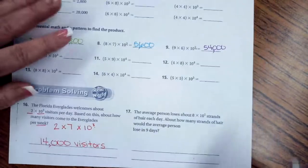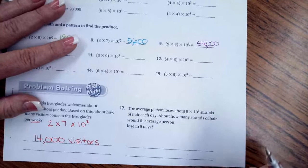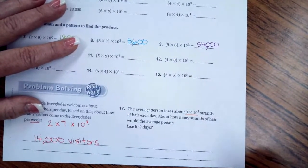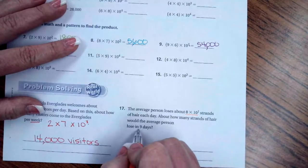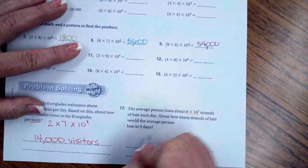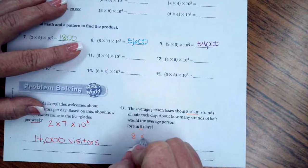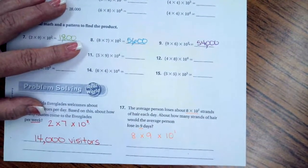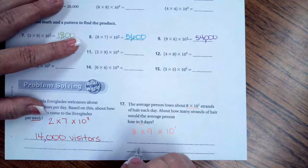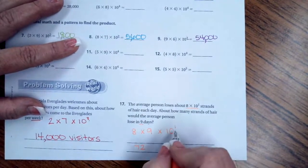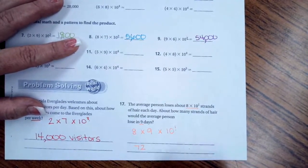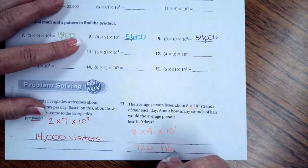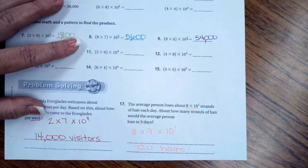We're going to go to number 17 over here. It says the average person loses about 8 times 10 to the 1 strands of hair each day. How many strands of hair would the average person lose in 9 days? So, now we're going to have 8 times 9 times 10 to the 1st. Well, 8 times 9 is 72, and then 10 to the 1st tells us we need to add one 0 to the end. So, 720 hairs.